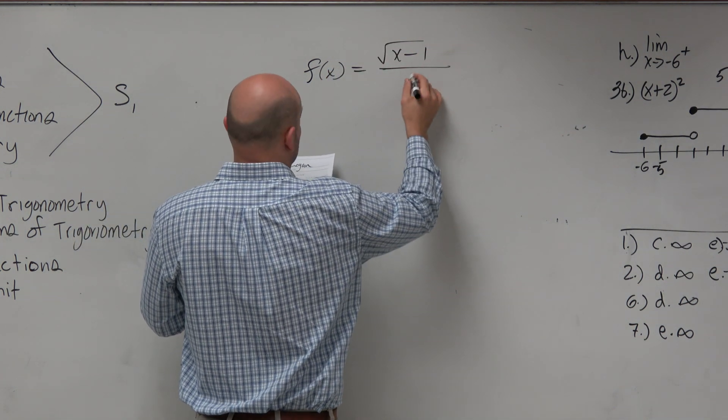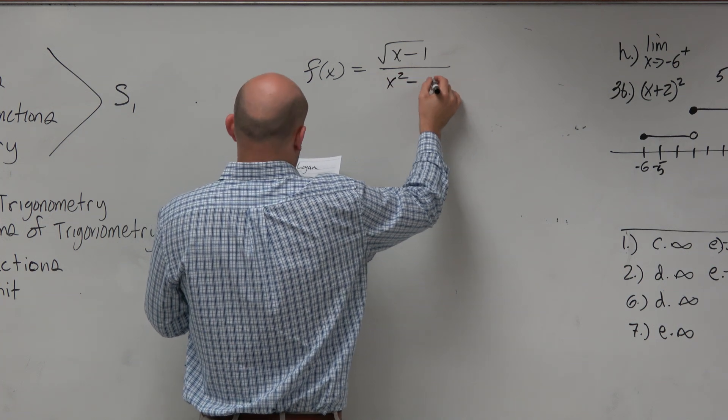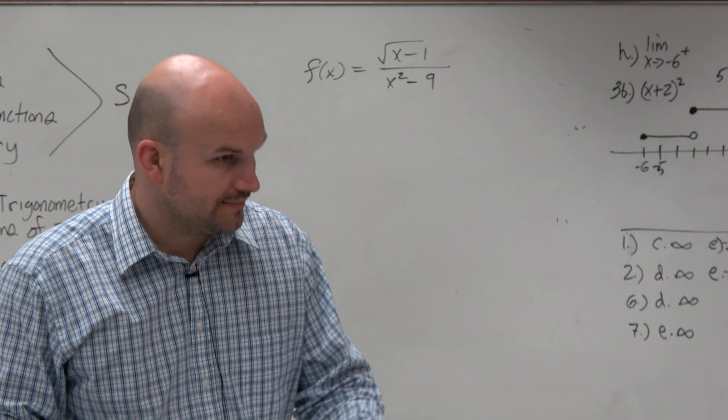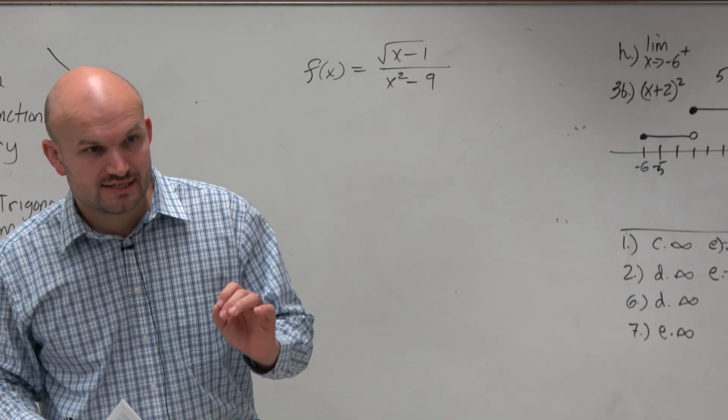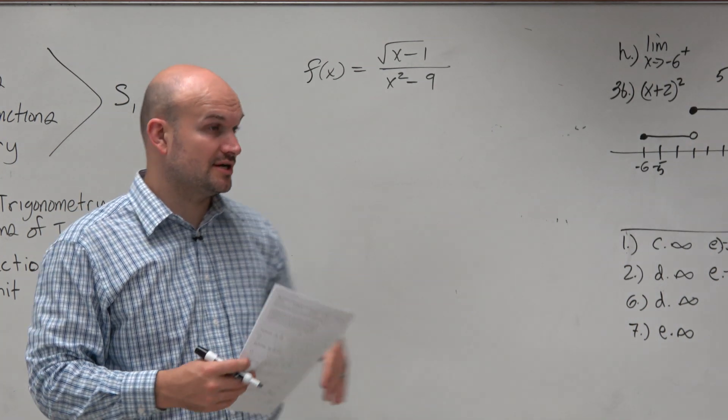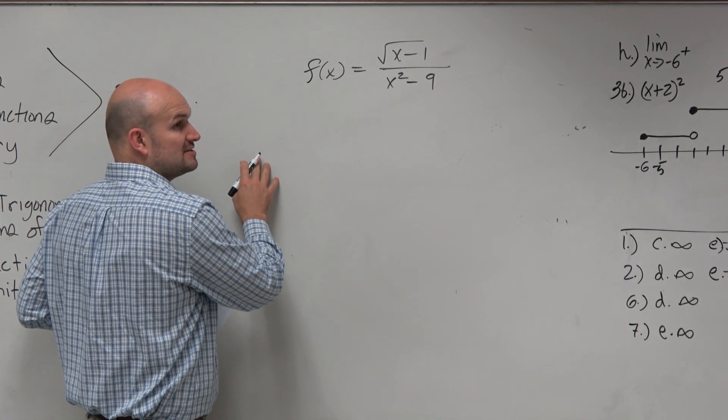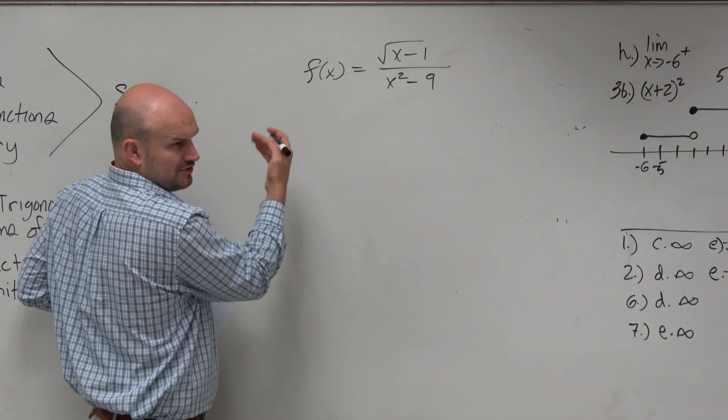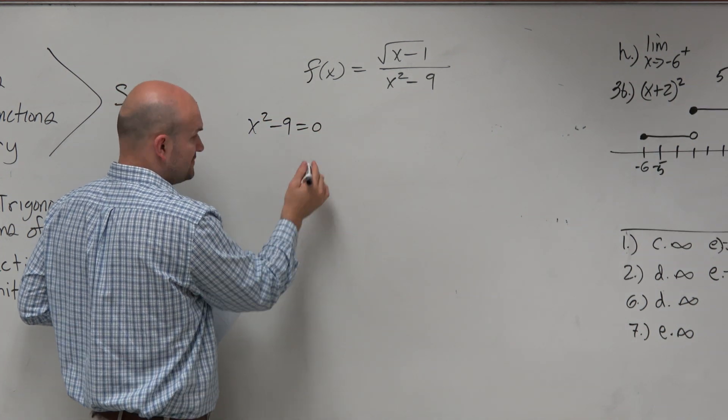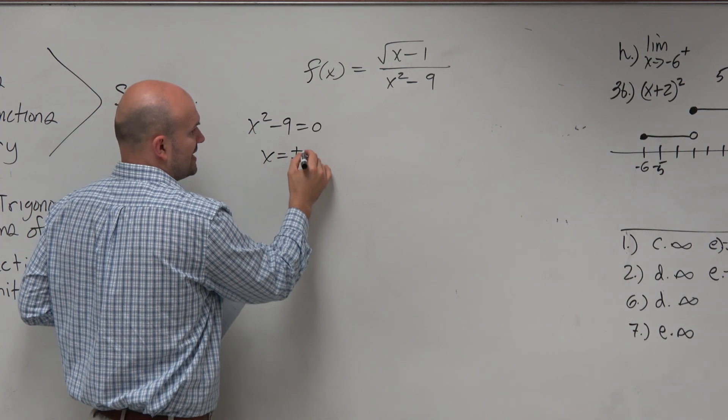There are a couple things to remember about domain restrictions from chapter 1. We know the denominator cannot equal 0, so we want to find what values make the denominator 0. We set up this equation x²-9=0 and solved to get x equals plus or minus 3.